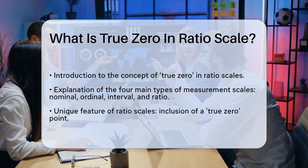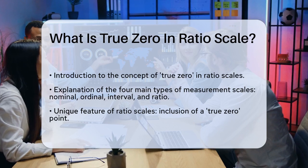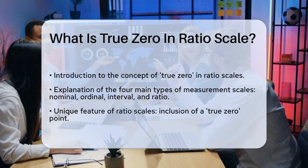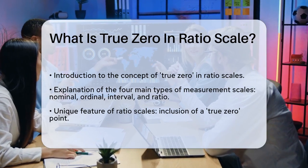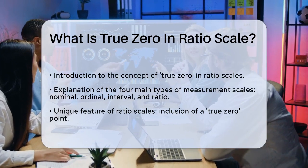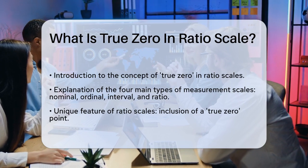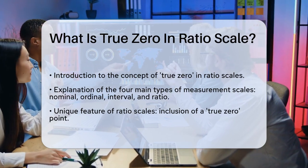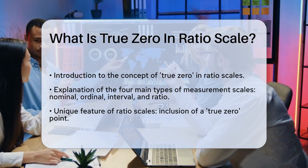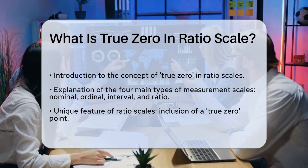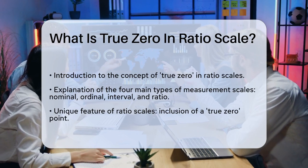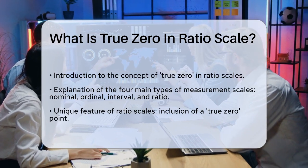When we talk about scales of measurement, there are four main types: nominal, ordinal, interval, and ratio. Each of these scales has different properties, but the ratio scale is unique because it includes a true zero point.